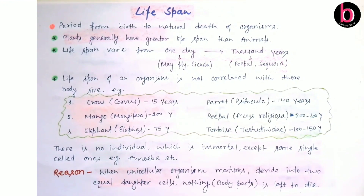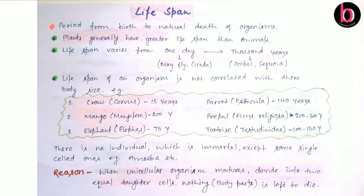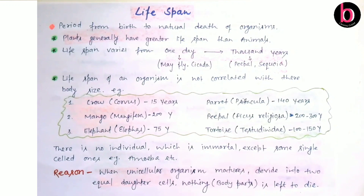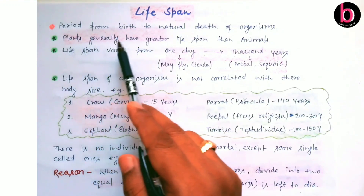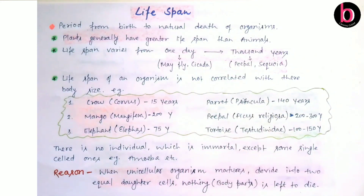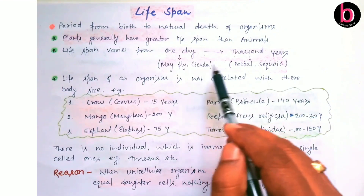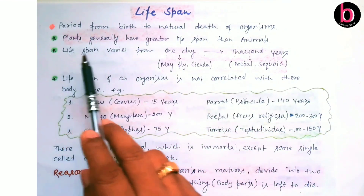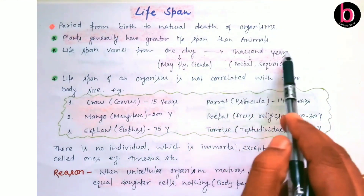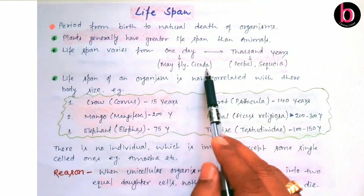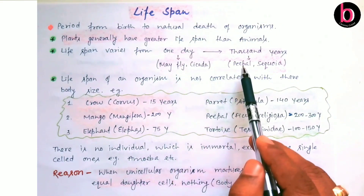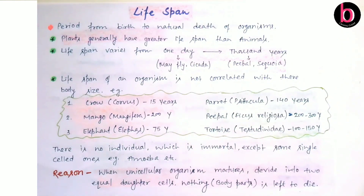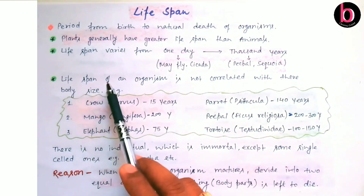Life span is variable from organism to organism. Plants generally have a greater life span than animals. Life span can range from one day to thousands of years — for example, the mayfly and cicada insect have a life span of nearly one day, while the Peepal tree can live up to a thousand years or more.